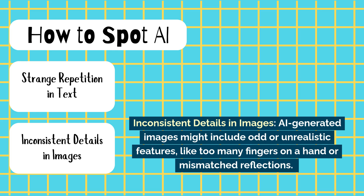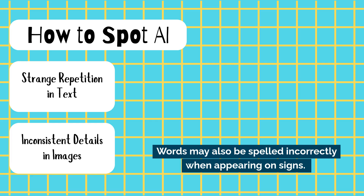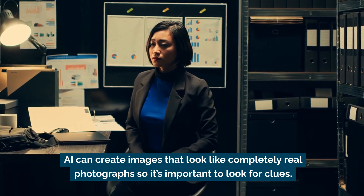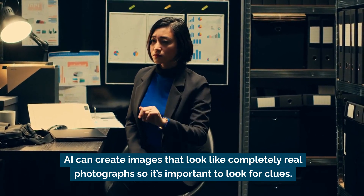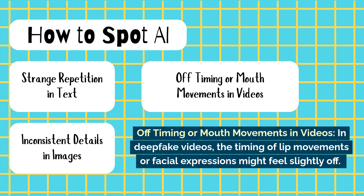Another clue is inconsistent details in images. AI generated images might include odd or unrealistic features, like too many fingers on a hand or mismatched reflections. Words may also be spelled incorrectly when appearing on signs. AI can create images that look like completely real photographs, so it's important to look for these clues. In videos, look for off timing or mouth movements.